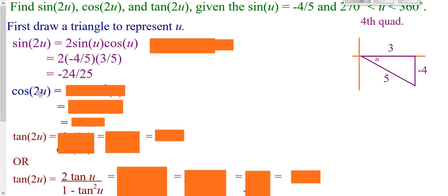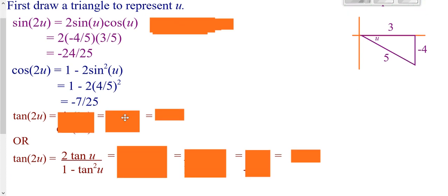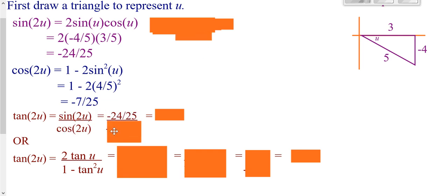When dealing with my double angle cosine, I have three formulas I could use and any one will work. Since we were given the sine, I'm going to use the one that only has sine: 1 minus 2 sine squared u. I plug in my sine value, square it, and work that out to get negative 7 over 25. Now, since tangent equals sine over cosine, and I just figured out the sine of 2u and the cosine of 2u, I can just divide those two answers to get my final answer for tangent of 2u.